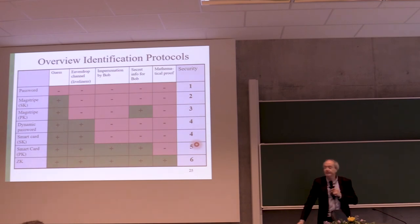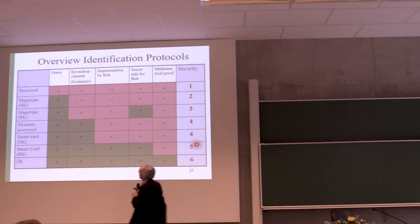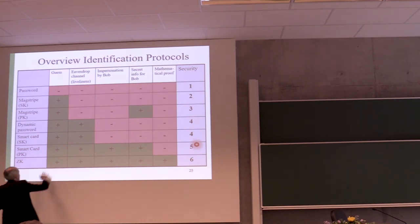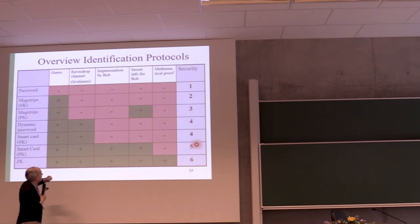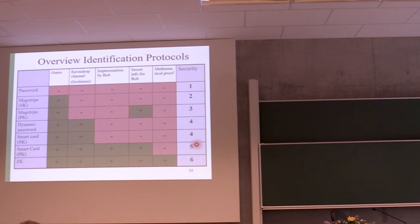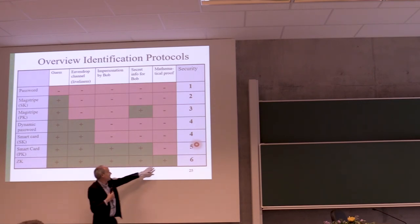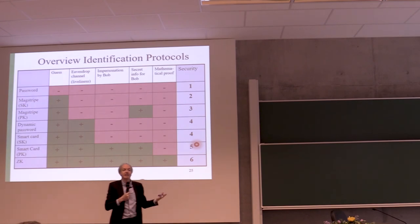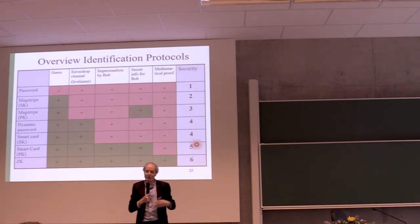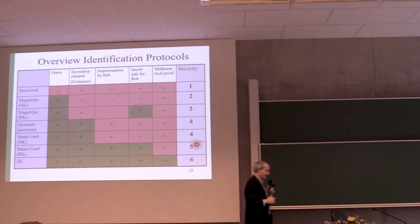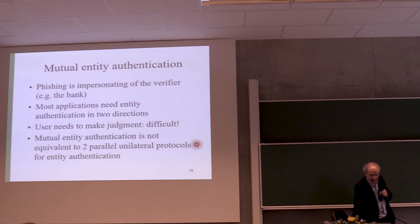Summarizing the properties: everything except passwords protects against guessing. Liveliness is achieved once you have an interaction. Impersonation by Bob is stopped once you have public key technology. Secrets for Bob are eliminated with public key. And only in zero-knowledge do you have a mathematical proof that Bob learns nothing about Alice's secrets — but the price is Bob cannot prove he saw Alice.